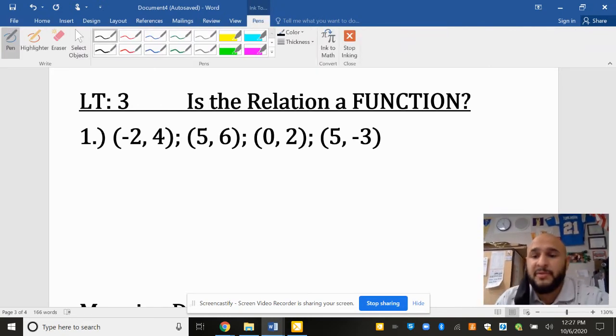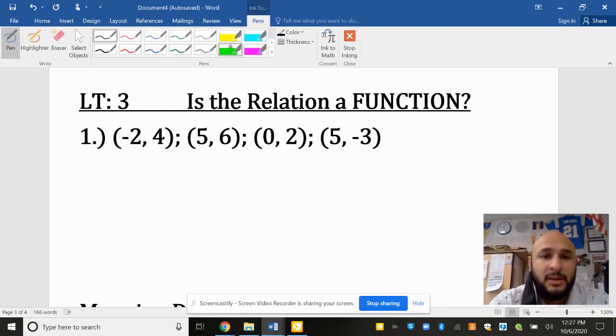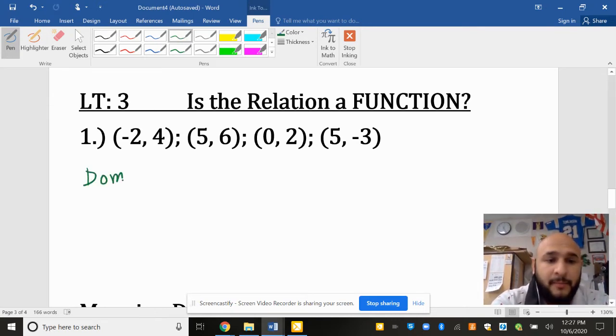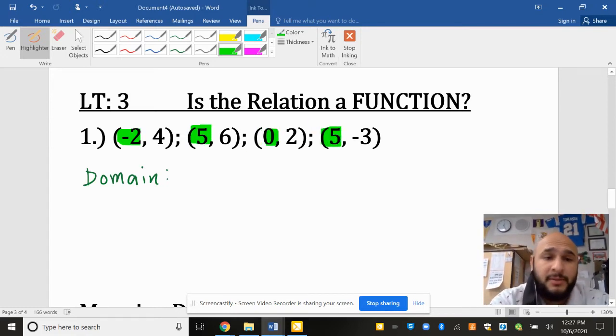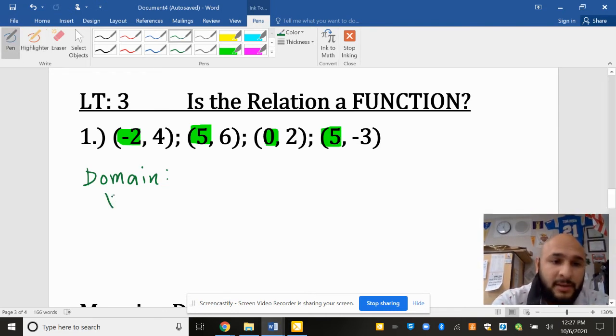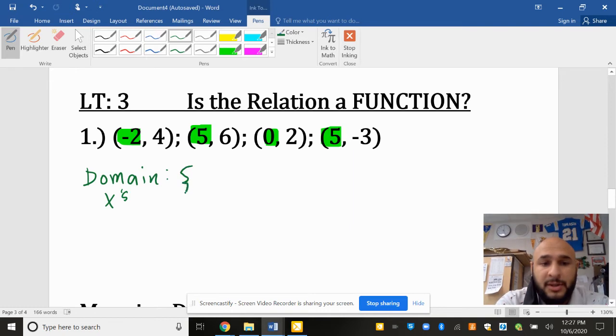I'm going to start by reviewing domain and range. Our domain, if you recall, is all our x values or our input values. So our domain for this relation here is negative 2, 5, and 0.